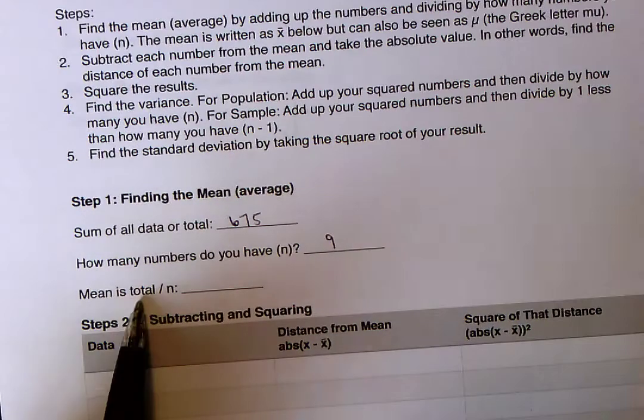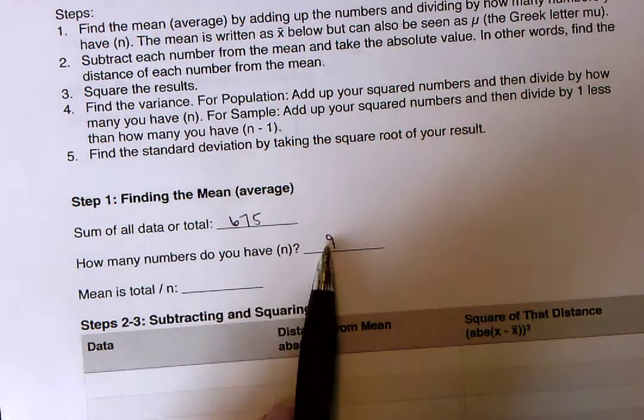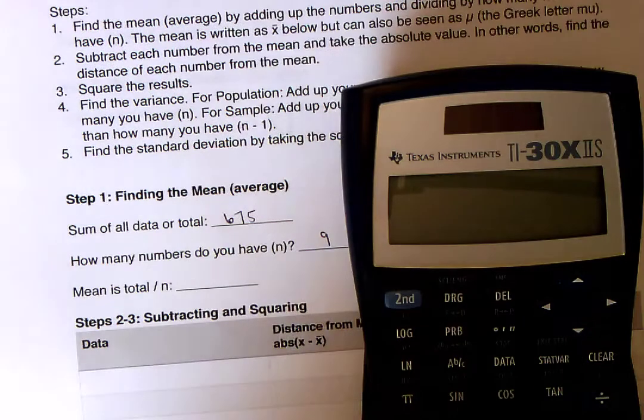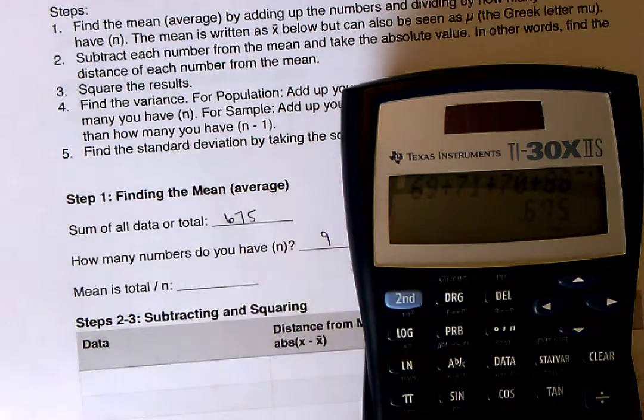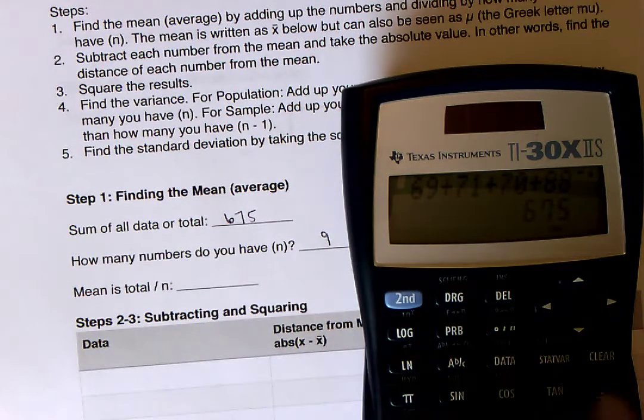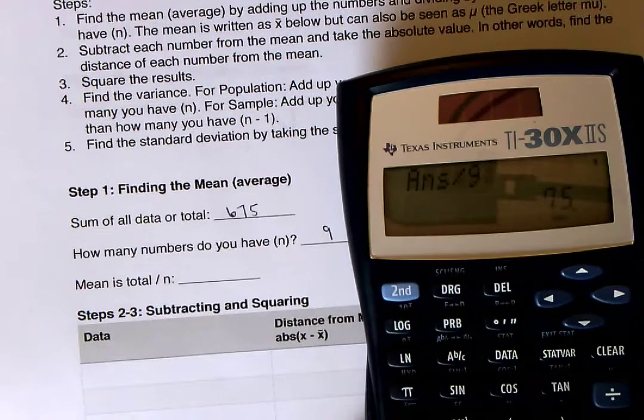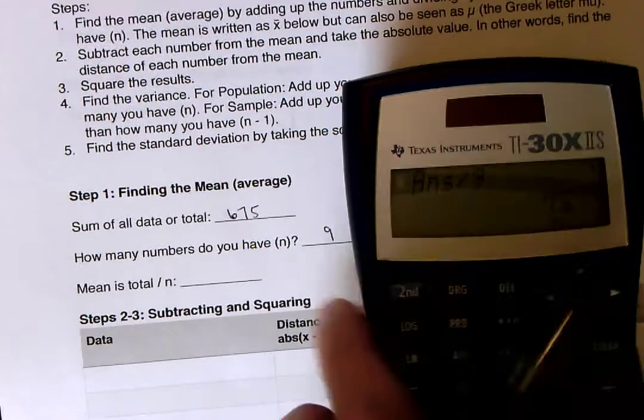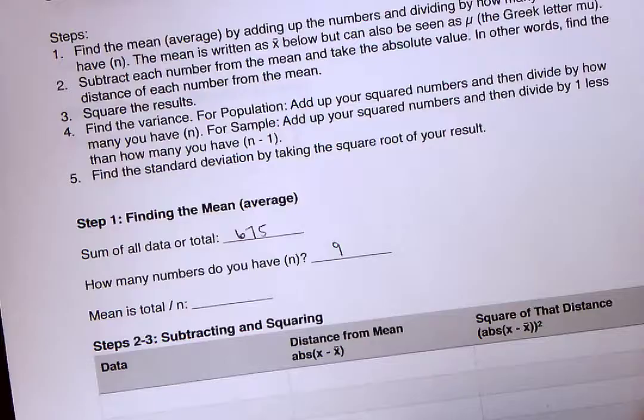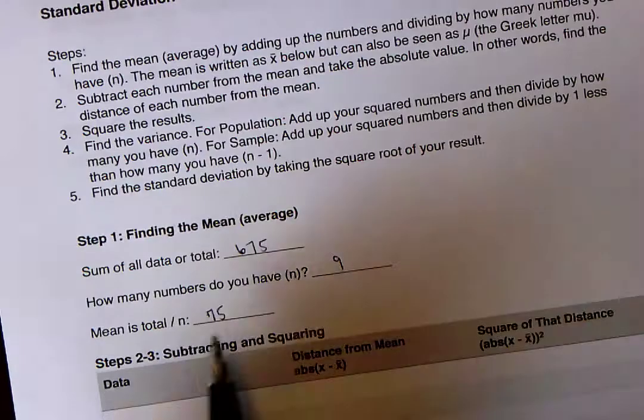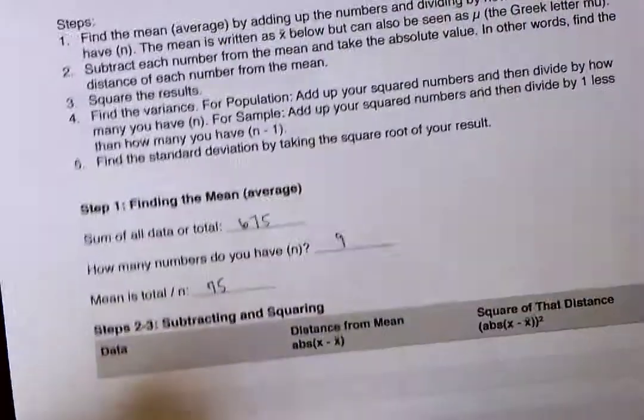And then the mean is the total divided by how many numbers you have. So we're going to do on here on our calculator, we're going to do 675 divided by 9. So I'm just going to do that right now, 675 divided by 9, and that ends up being 75. So that's my mean. So that was all, we had to find the average of the mean.